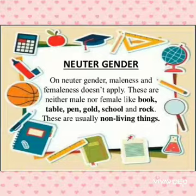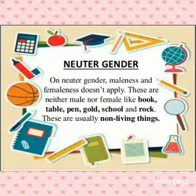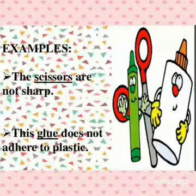The last category is neuter gender. In neuter gender, maleness and femaleness doesn't apply. These are neither male nor female, like book, table, pen, gold, school, rock.